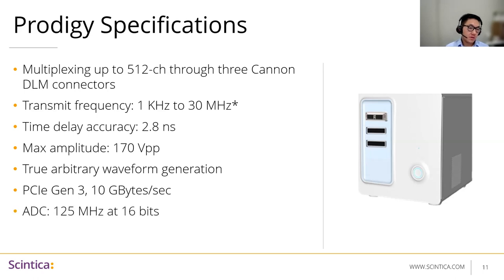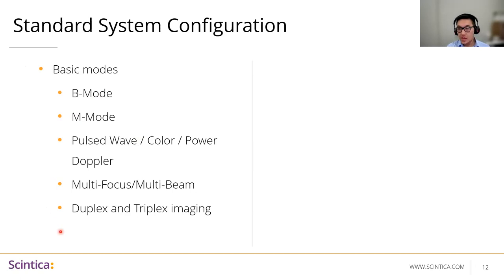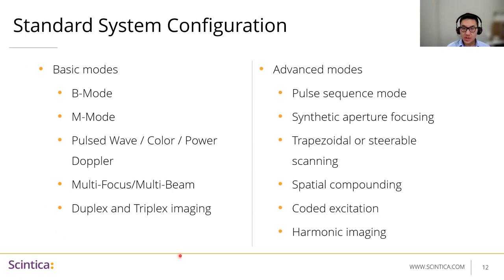The receive-side electronics has a sampling rate of up to 125 megahertz at 16 bits. The Prodigy supports a number of basic ready-to-use modes you'd expect from any ultrasound system, all included as turnkey solutions with no extra cost for any modes. These include standard B-mode, M-mode, pulse wave, color, and power Doppler, as well as multi-focus or multi-beam, and duplex and triplex imaging. In addition, there's capability for pulse sequence modes: synthetic aperture focusing, trapezoidal or cerebral scanning, spatial compounding, coded excitation, or harmonic imaging.